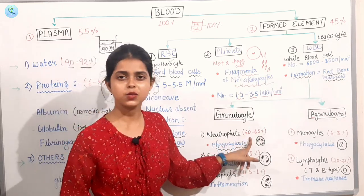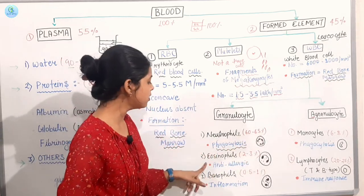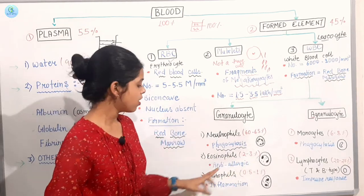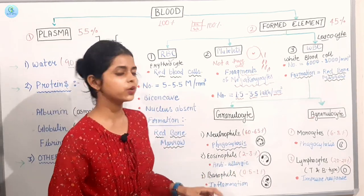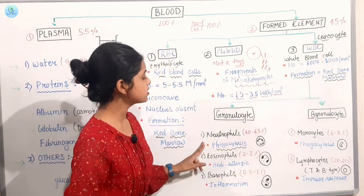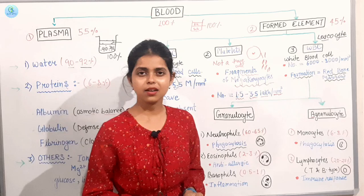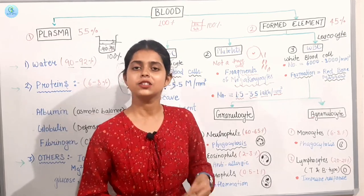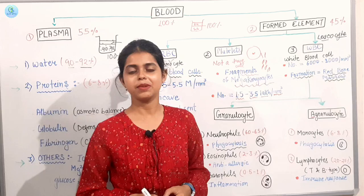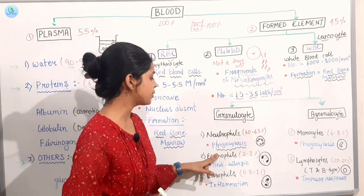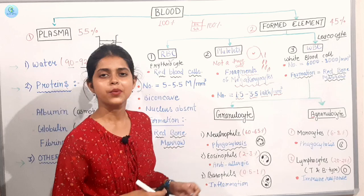And the second is the eosinophils, which is 2-3%. And the third is our basophils, which is 0.5% to 1%. Neutrophils, which do phagocytosis. If there are foreign particles in your body, you can see that there is a virus or bacteria in your body, which helps your body to protect your body.